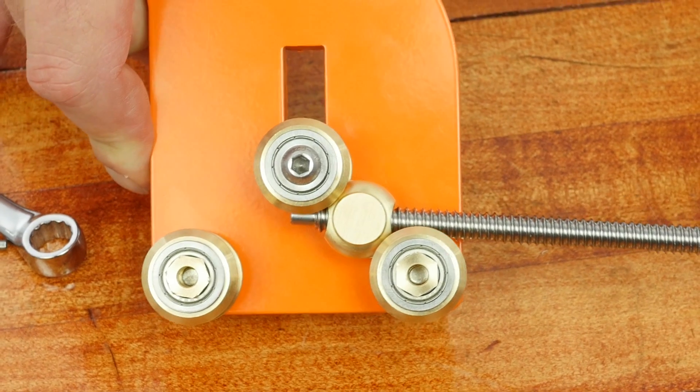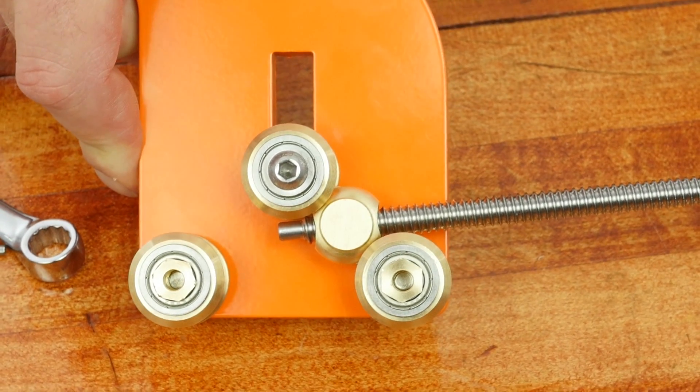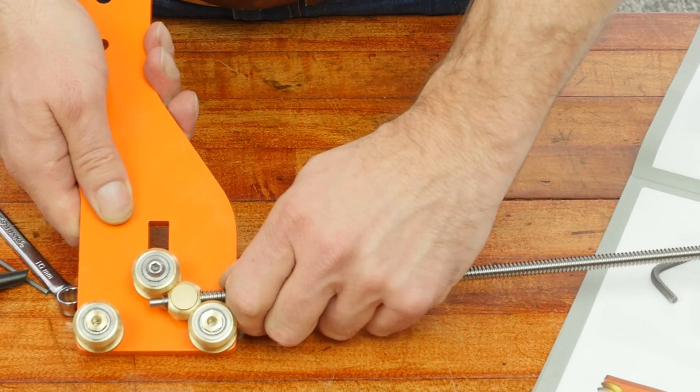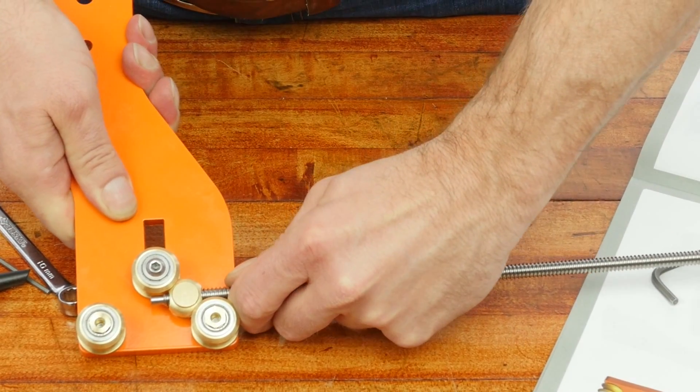Notice how the brass nuts can rotate slightly in the orange plates. Never grab the lead screw from the end, but instead grab it as close to the lead screw nut as possible.